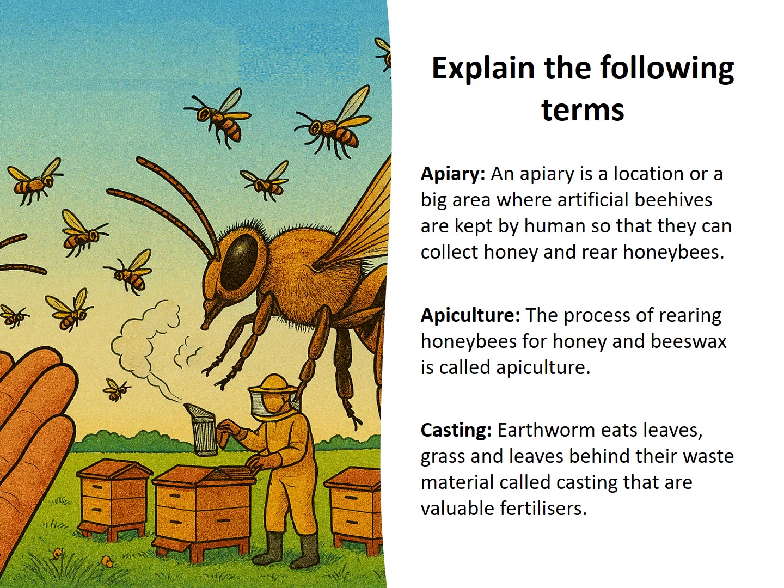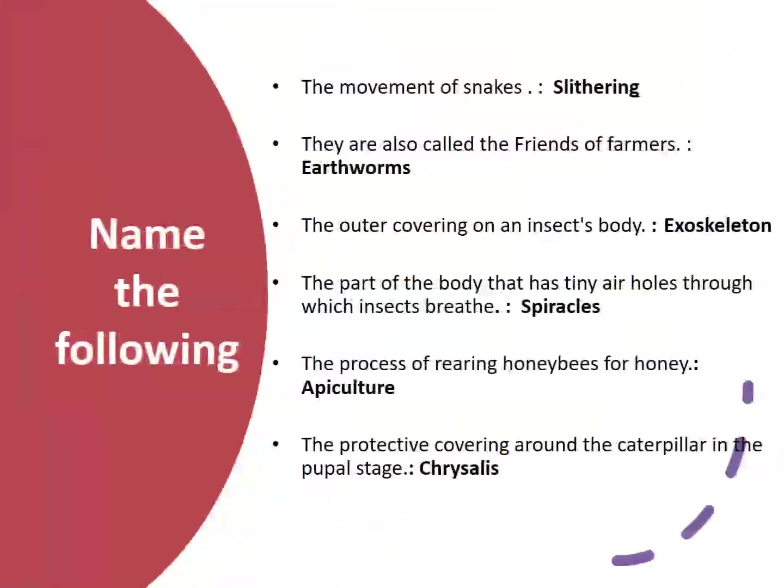Casting: earthworms eat leaves and grass and leave behind their waste material called casting, which are valuable fertilizers. The movement of snakes is called slithering. Earthworms are also called the friends of farmers.